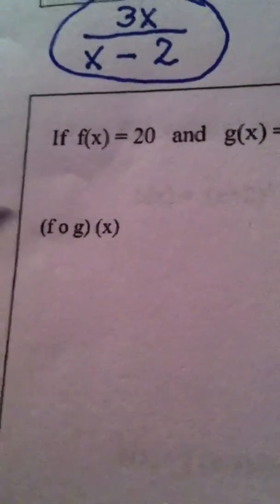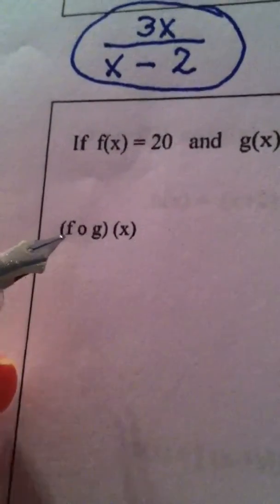f composed with g of x, and then g composed with f of x. Alright, let's start here. If I want to find f composed with g of x, I take x and I put it into g.